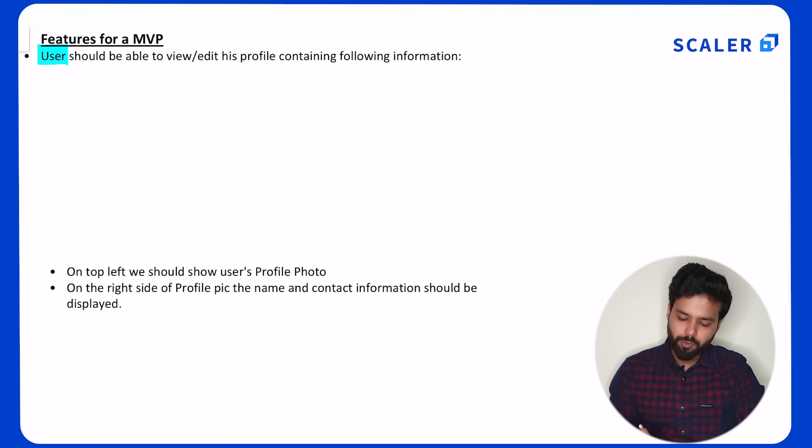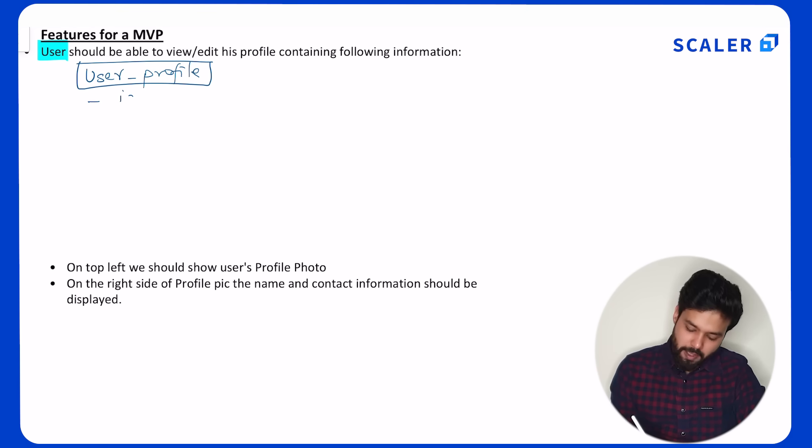The first feature is that a user should be able to view and edit his profile which contains the following information. This gives us a hint that there should be a user entity table. So let's add a user profile entity. Every entity that you create will have one attribute which is ID. This will be used to uniquely identify a user profile. The other attributes would be coming from the next set of requirements. On top left, a user should have a profile photo. On the right side of profile pic, we should also show name and contact information.